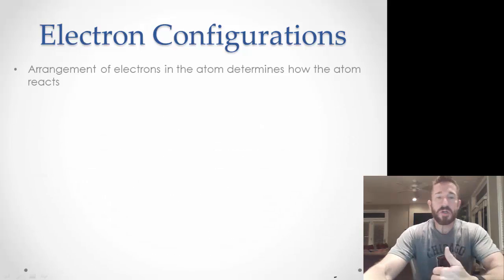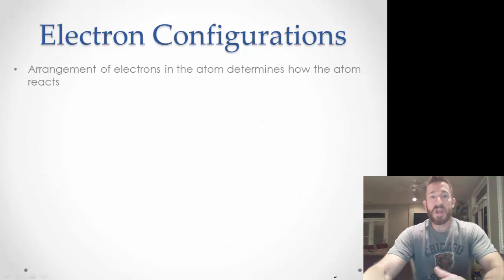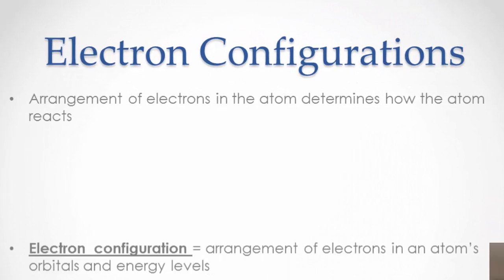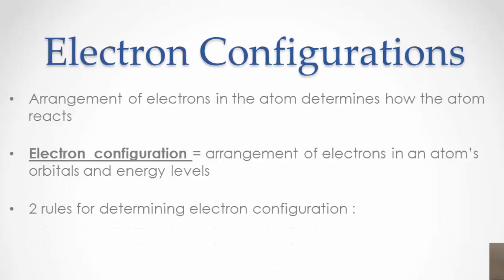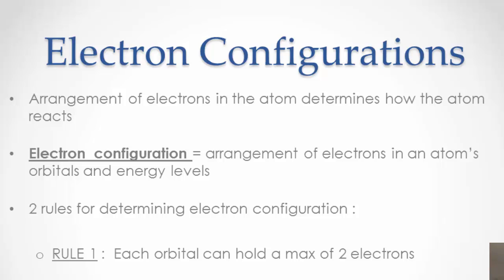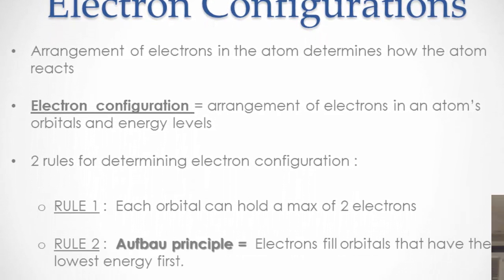Electron configuration is the arrangement of electrons in the atom, and it determines how the atom reacts. Electron configuration equals the arrangement of electrons in an atom's orbitals and energy levels. There are two rules for determining electron configurations. Rule one: each orbital can hold a maximum of two electrons. Rule two is called the Aufbau principle: electrons fill orbitals that have the lowest energy first.